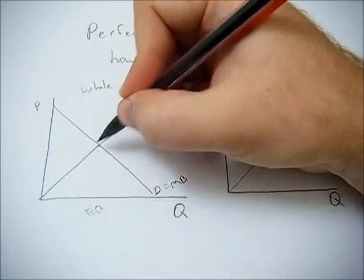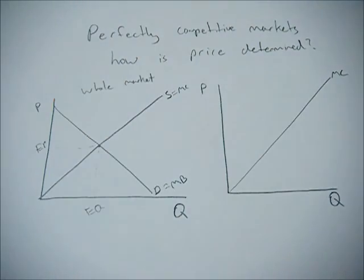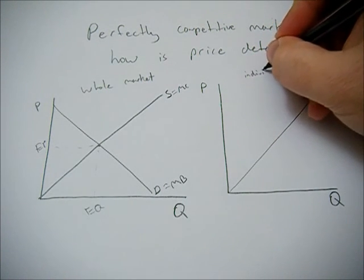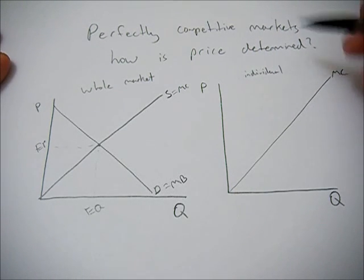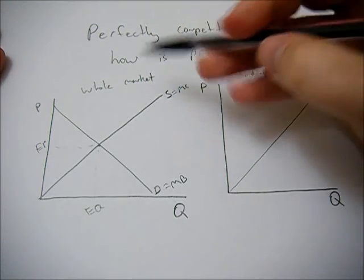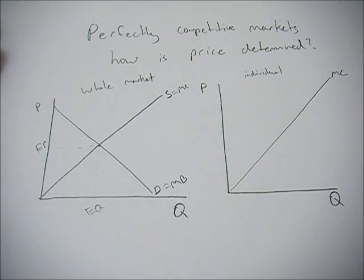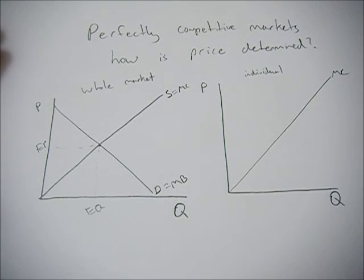But for the perfectly competitive firm, the individual firm, this isn't the case. The way the individual firm gets its price determined in a perfectly competitive market is through the interaction of all the firms in the whole market. The reason is because in a perfectly competitive market, a firm is not large enough to influence the price of the good.